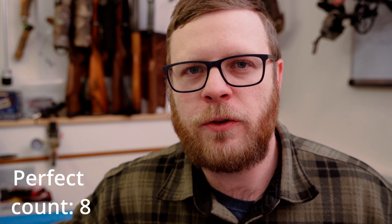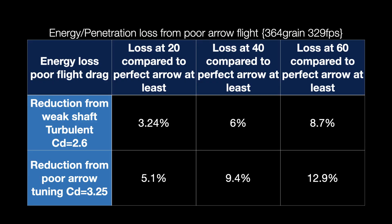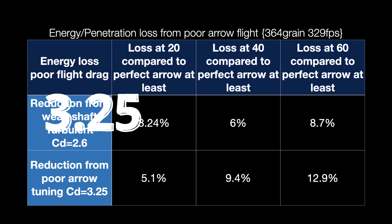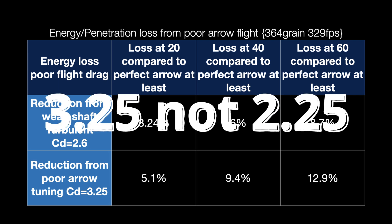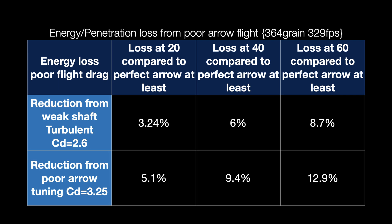Perfect aero flight is the most important factor for retaining energy and getting more penetration — and it also helps you hit where you need to. Here are some examples of energy loss from poor aero flight: a weak shaft loses 2.25% at 20 yards and 8.5% at 60 yards. With poor aero flight, you lose anywhere from 5% at 20 yards to almost 13% at 60 yards.